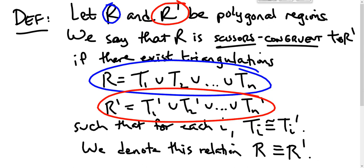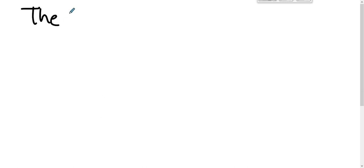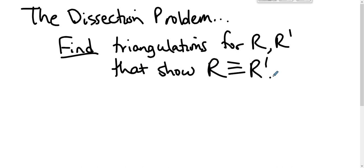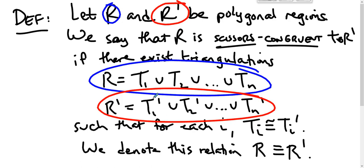The dissection problem for us is to find triangulations for R and R prime that show that R is scissors congruent to R prime. Now there have to be n triangles in each of the triangulations and each of these must be congruent.